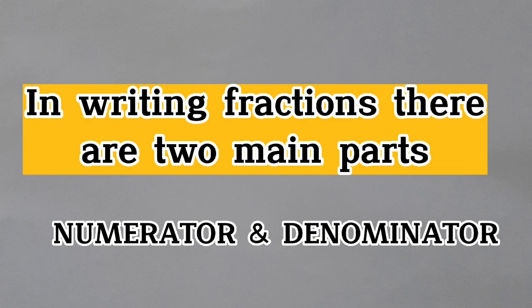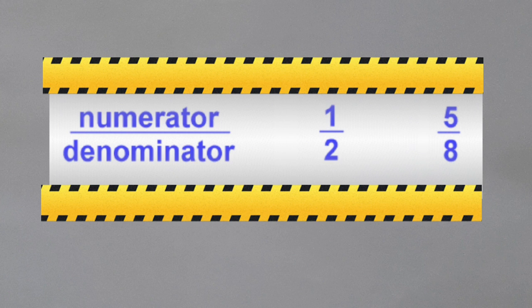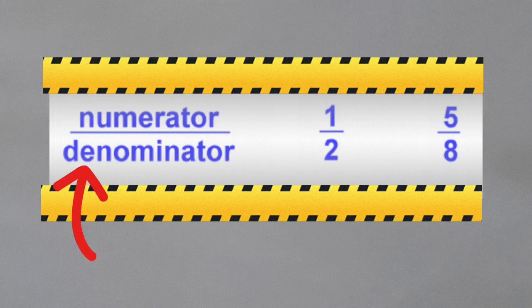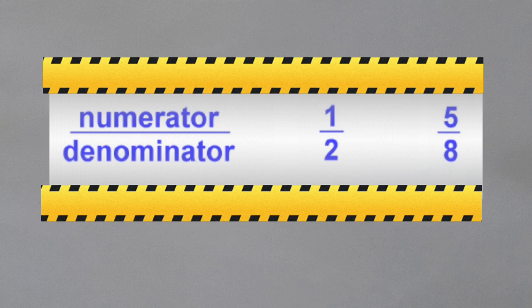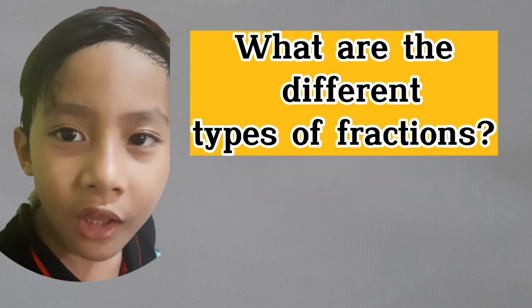In writing a fraction there are two main parts: the numerator and the denominator. The numerator is how many parts you have. The denominator is how many parts the whole was divided into.